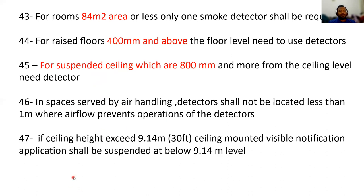If the ceiling height exceeds 9.14 meters (30 feet), ceiling-mounted visible notification appliances shall be suspended below the 9.14-meter level. A flasher should be installed if the room height is more than 9.14 meters, and it should be hung with a suspension below 9.14 meters.